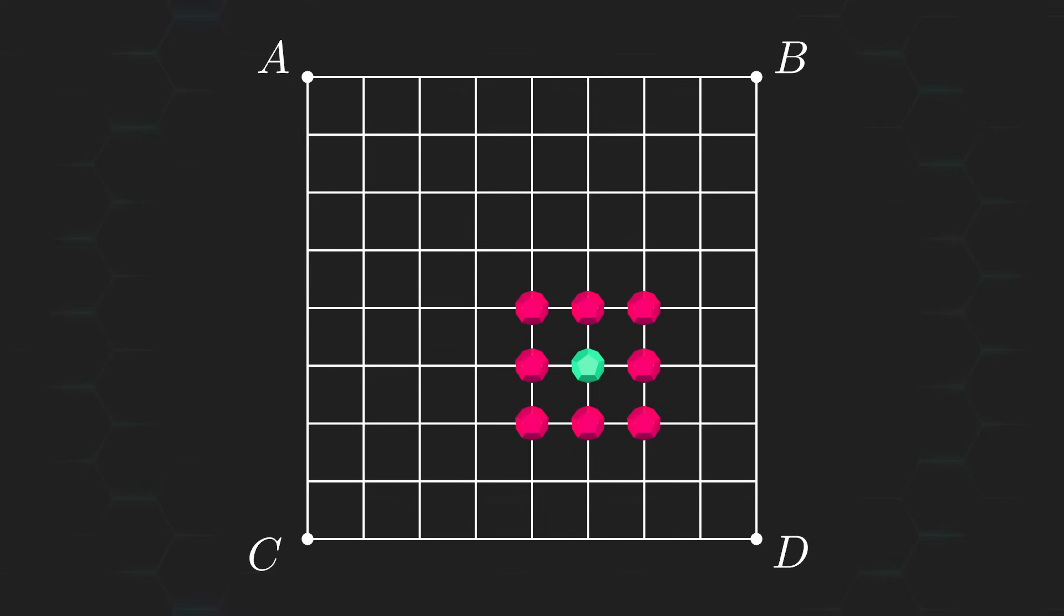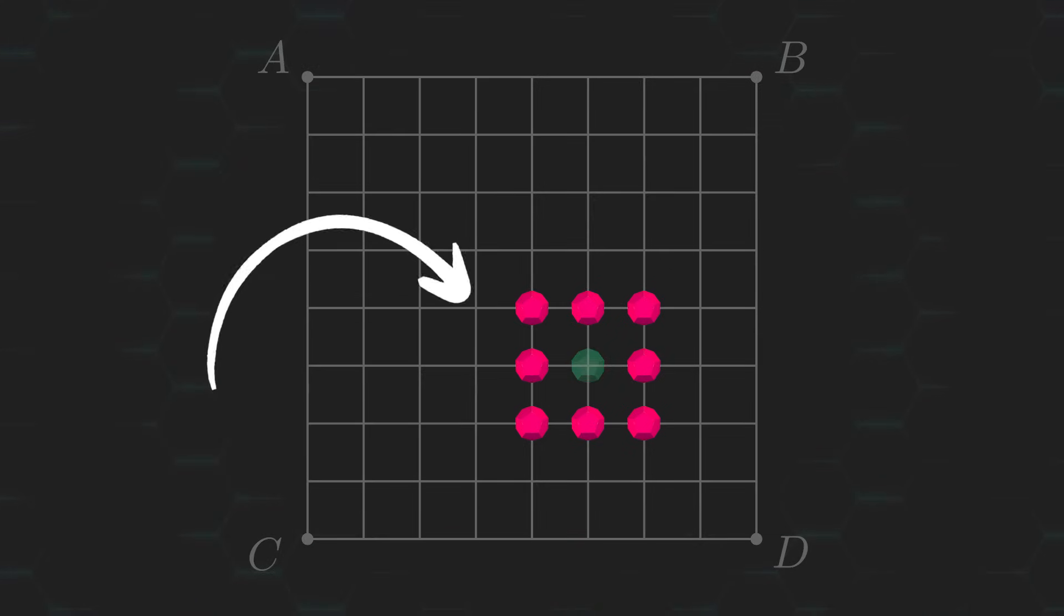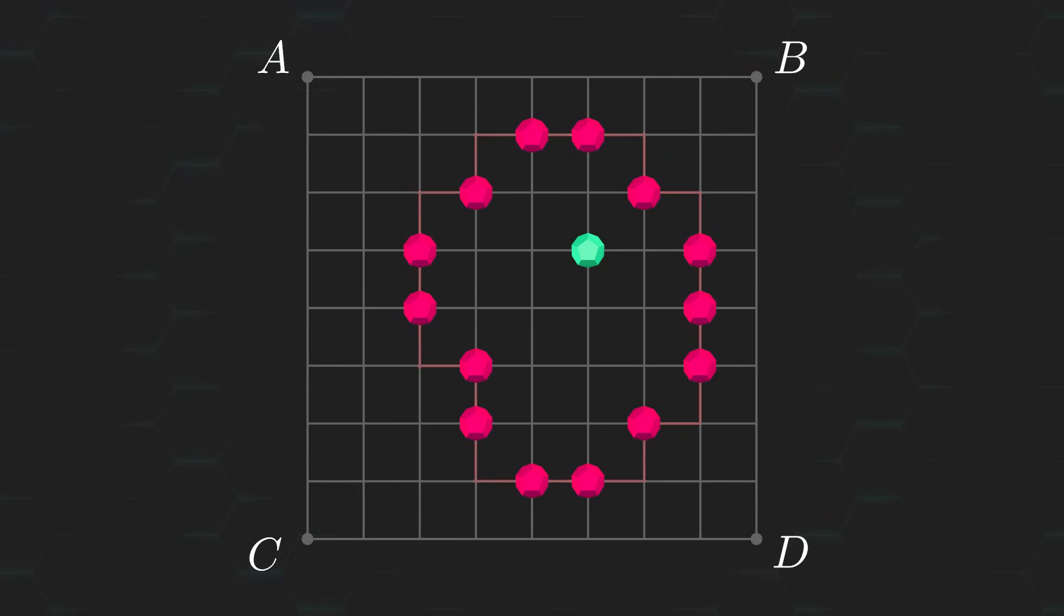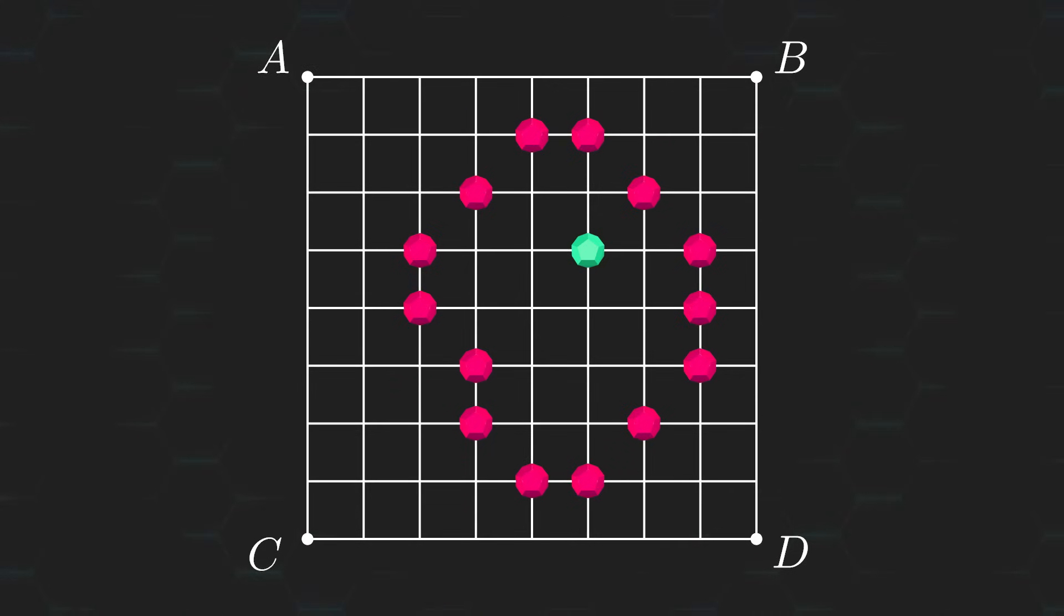Now, for you to be able to pull this off, you'll have to surround the greenstone with some closed connection of redstones. It doesn't matter how small or how big this connection is, as long as the greenstone is blocked from being able to access any of the four corners, then you'll guarantee yourself a win.